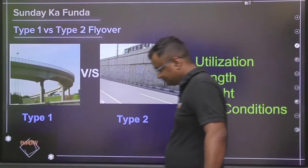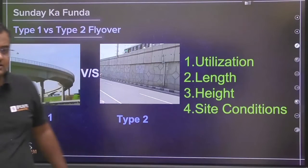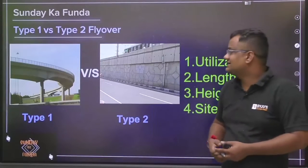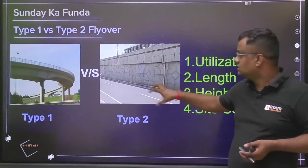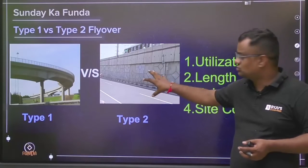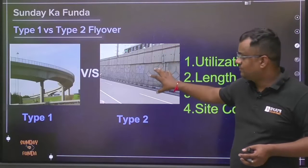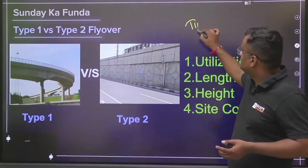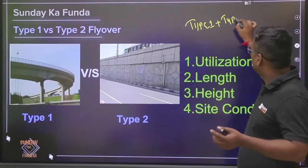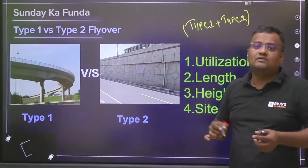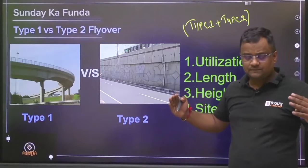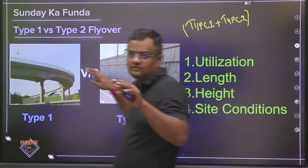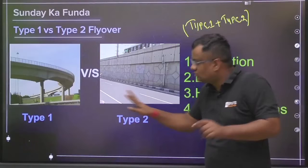Next is site conditions. When the budget for type one and type two is almost equal and soil is readily available at the site, you can go for type two, because millions of cubic meters of soil need to be filled and compacted. Also, flyovers are not always purely type one or purely type two — many flyovers are a combination. At the initial slopes it may be type two, and at the maximum height section it becomes type one.